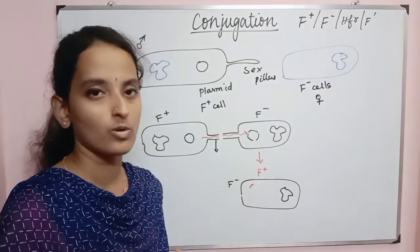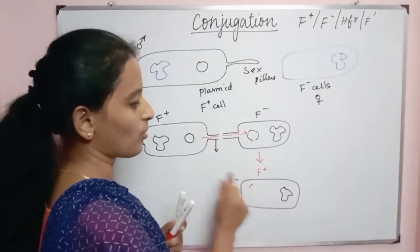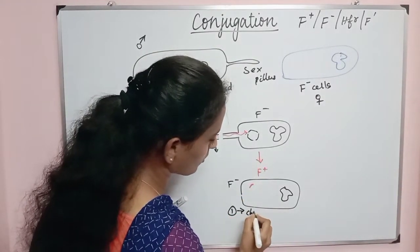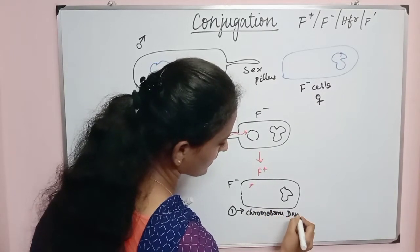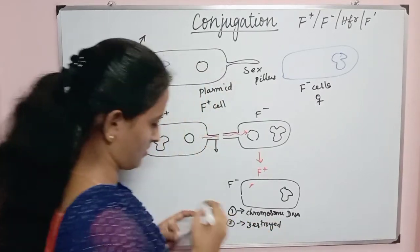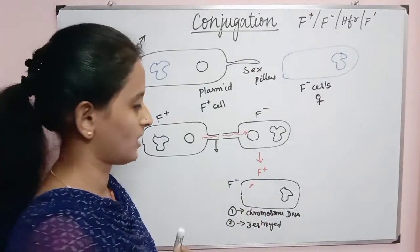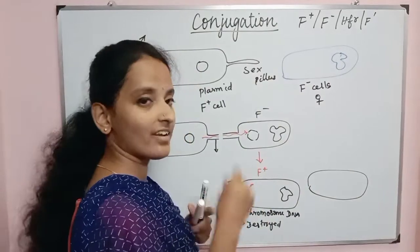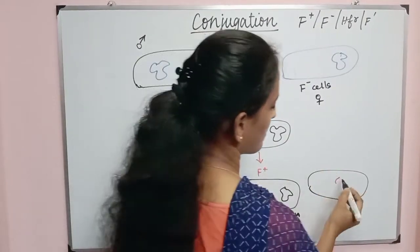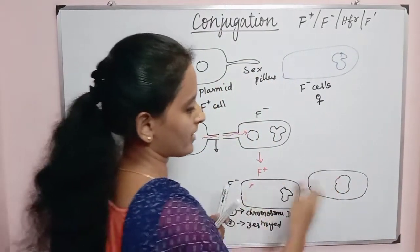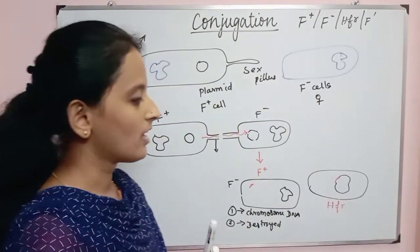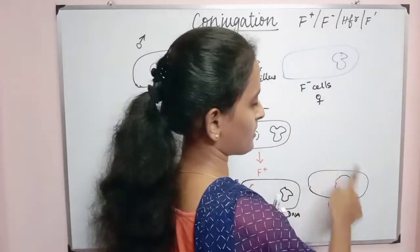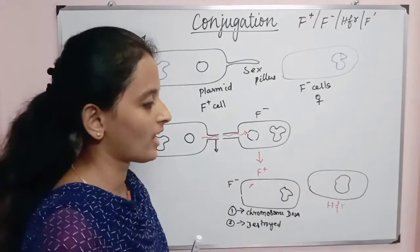Now there are two processes. Either the small plasmid fragment integrates with the chromosomal DNA, or it will be destroyed. If it integrates into the chromosomal DNA of the F- cell, that bacterium is now called an HFR bacterium. HFR stands for High Frequency Recombination. The chromosome integrated with the plasmid is called an HFR bacterium.